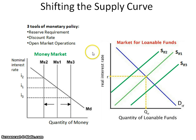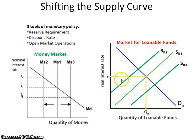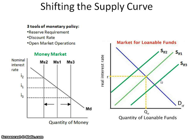Looking at what shifts the loanable funds curves, let's start with the supply curve, which relates to the banks. It is tied to the money supply. If the Fed uses a monetary policy tool to increase the money supply, there's more money available to be loaned, and that will increase the supply of loanable funds.